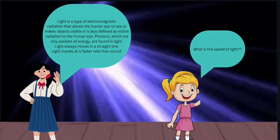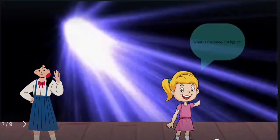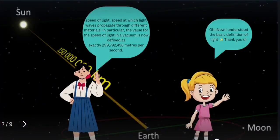What is the speed of light? Speed of light - the speed at which light waves propagate through different materials. The value for the speed of light in a vacuum is exactly 297,458 meters per second.